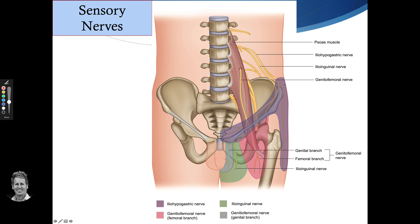The iliohypogastric covers the purple area — the anterior pubic area and also the lateral gluteal area. The sensory is controlled by the iliohypogastric. From a motor perspective, that nerve and the ilioinguinal supplies the conjoined tendon of the internal oblique and also the transverse abdominis.